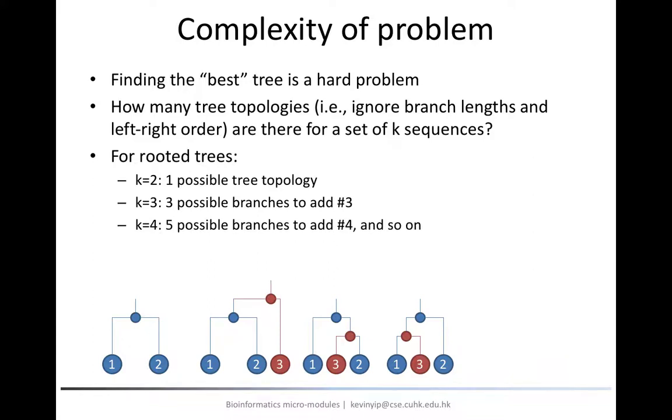In the same way, when there are four input sequences, we first pick a tree topology for the first three sequences, and then find out all the branches at which the fourth sequence can be inserted, and there are five of them.